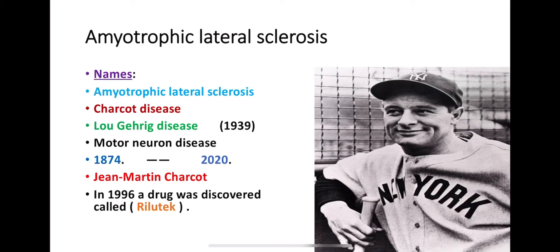We are going to talk about the history of ALS. It was described by the French doctor Jean-Martin Charcot. A famous American baseball player, Lou Gehrig, who played for the New York Yankees, also had this disease, which is why it became widely known as Lou Gehrig's disease.